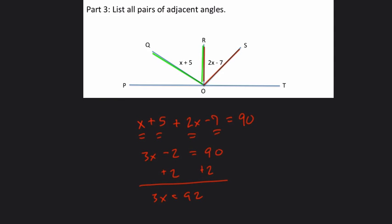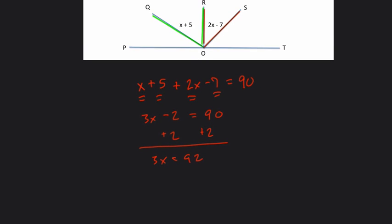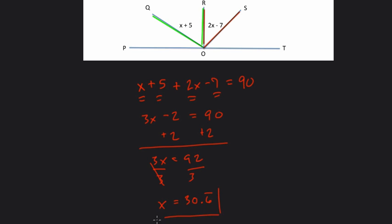So here we combine like terms, and they equal 90 degrees, and now we solve for X finally by dividing by 3. I know that 3 goes into 90 30 times, but it goes into 92 30 times with a remainder of 2, so I can say this is 30 and 2 thirds, or 30.6 repeating. That's our X value here.